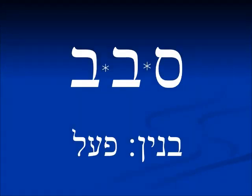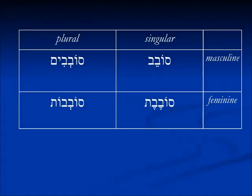An example of a geminate verb in Hebrew is sovev — samech bet bet — and it means to go around or to surround. First we're going to look at the pa'al binyan. The pa'al binyan actually looks quite normal, as we would expect: sovev, sovevet, sovevim, sovevot.